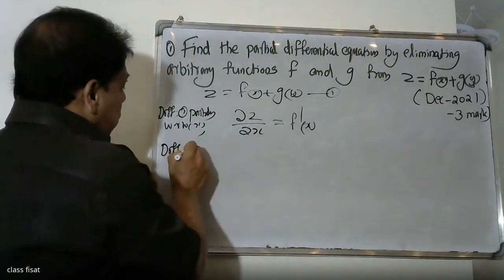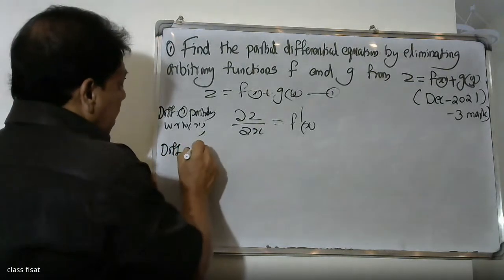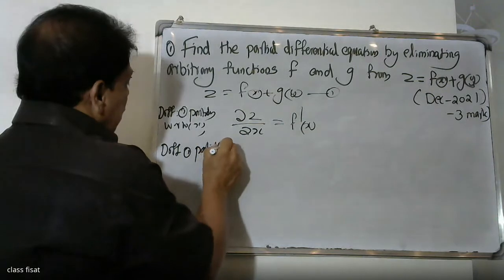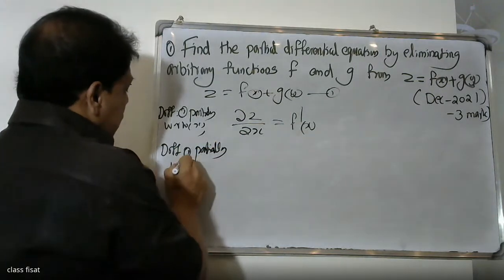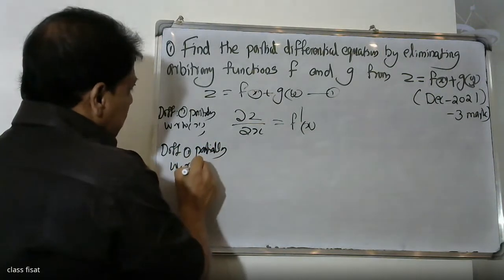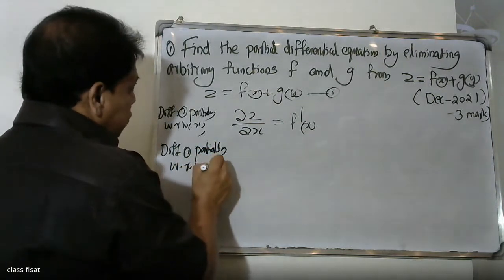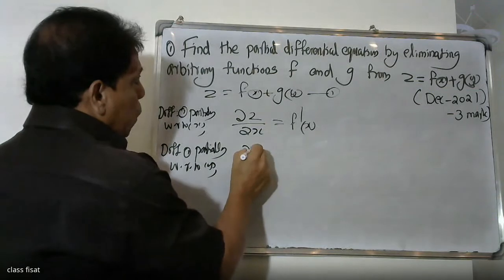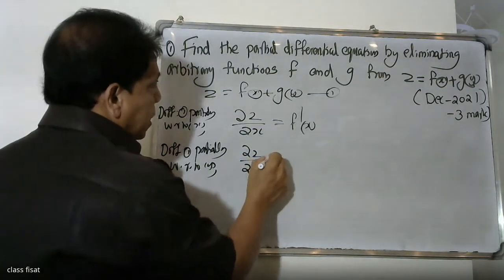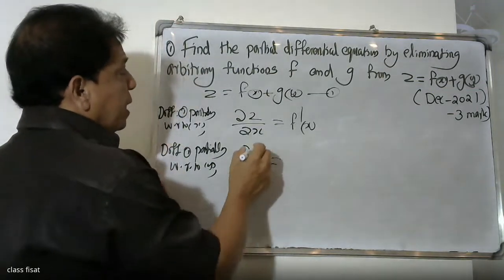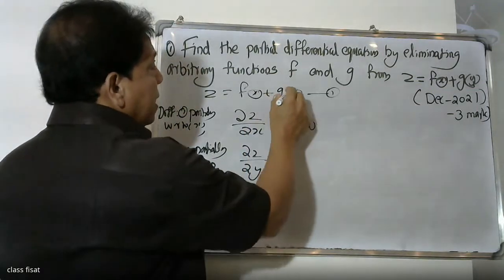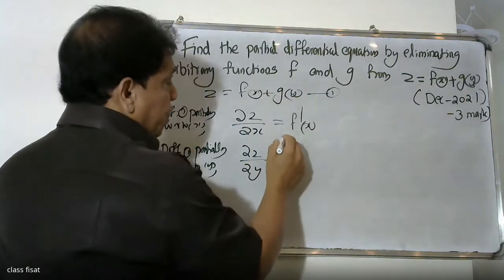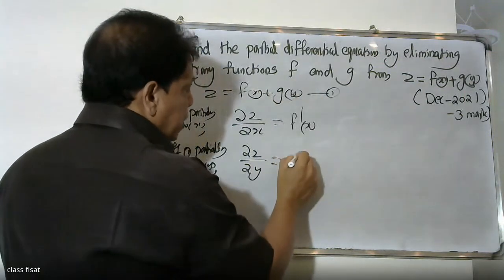Differentiating equation one partially with respect to y. ∂Z/∂y equals: f of x differentiates to 0, and g of y differentiates to g-dash of y.